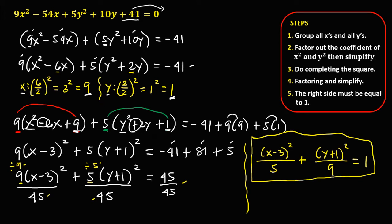In an ellipse, a squared is greater than b squared, so the bigger denominator is a squared and the smaller is b squared. From our standard equation, the denominators are 9 and 5. Since 9 is greater than 5, this means a squared equals 9 and b squared equals 5. Since a squared is the denominator of y squared, this ellipse is in vertical form.